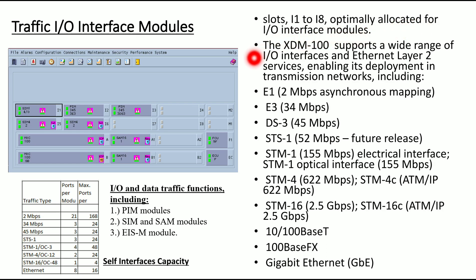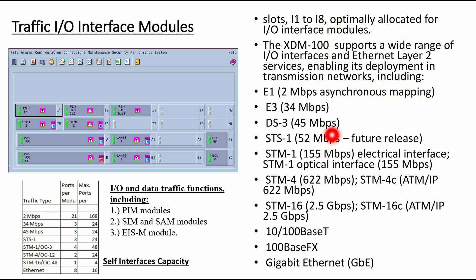The XTM-100 supports a wide range of input-output interfaces and Ethernet layer 2 services, enabling its deployment in transmission networks. The following cards can be inserted in slots I1 to I8: E1 card with 2 Mbps synchronization mapping, E3, DS3, STS1, STM1, STM1 optical interfaces, STM4, STM16, and Ethernet cards.